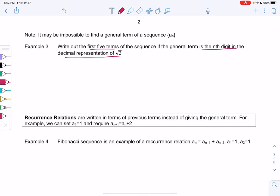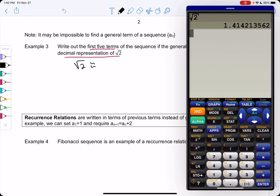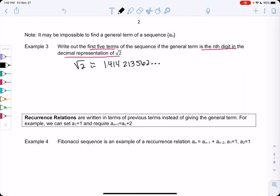We'll just list out the first five terms. Go ahead and find square root of 2 on your calculator. I got 1.414213562, and then it keeps going. Depending on your calculator, it'll have a different amount of decimal places.